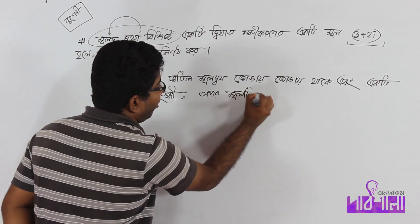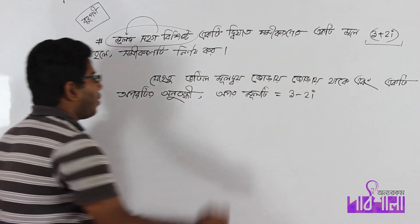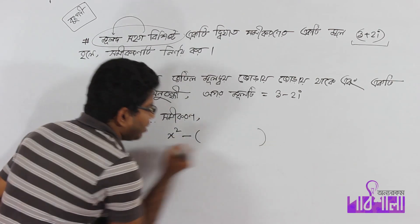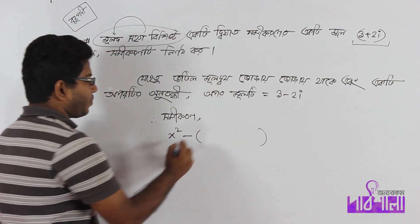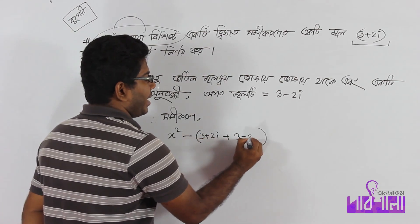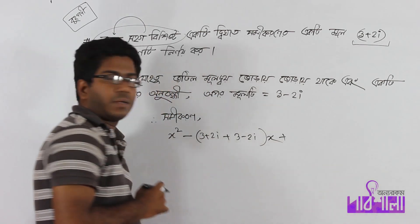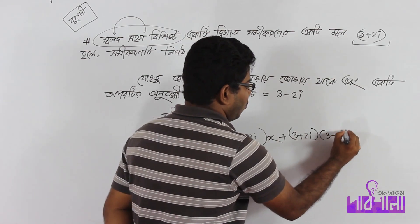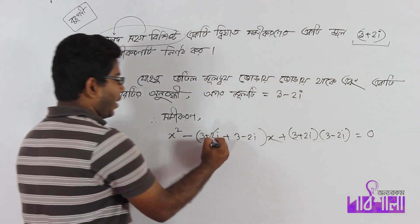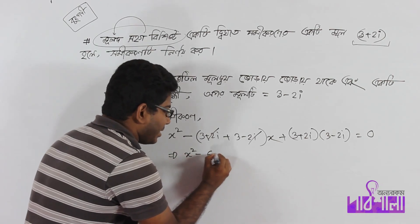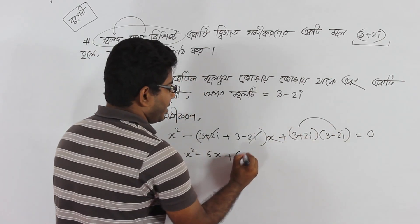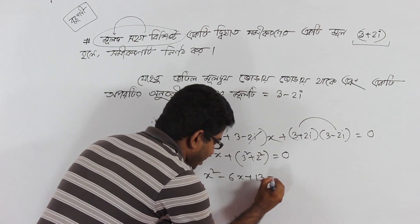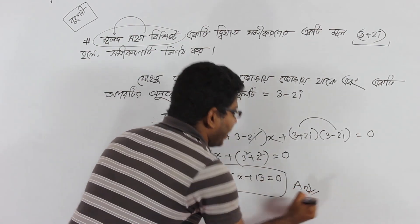সমীকরণের জন্য, যদি মূলদ্বয় 3+2i এবং 3-2i হয়, তাহলে সমীকরণটি হবে: x squared minus 6x plus 3 squared plus 2 squared equal to 0, অর্থাৎ x squared minus 6x plus 13 equal to 0. This is how we can do that.